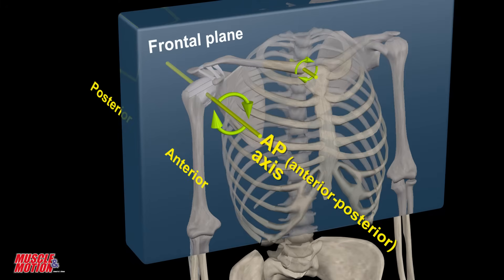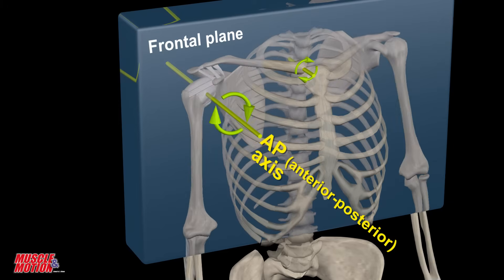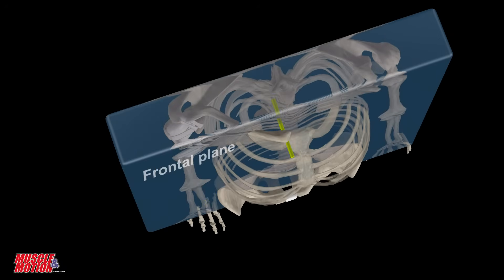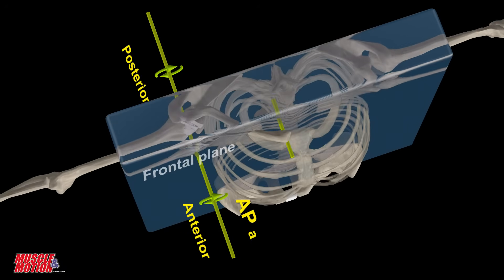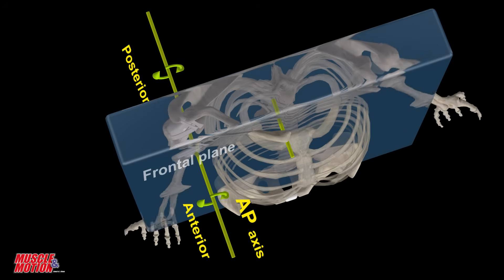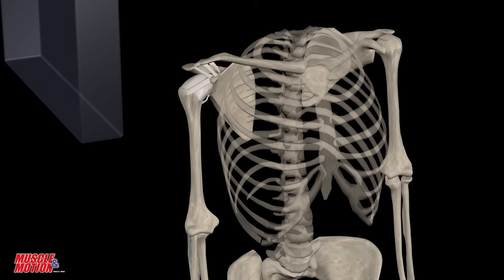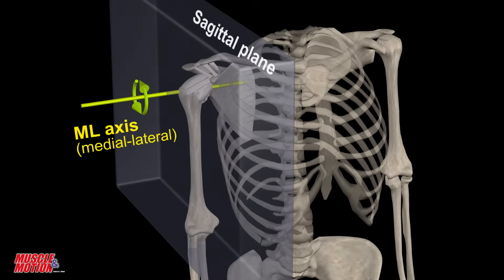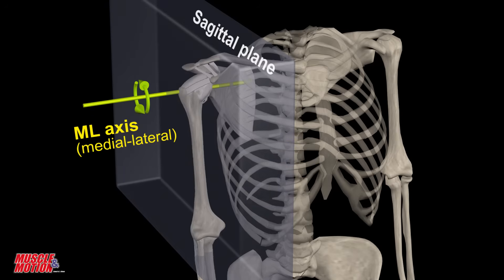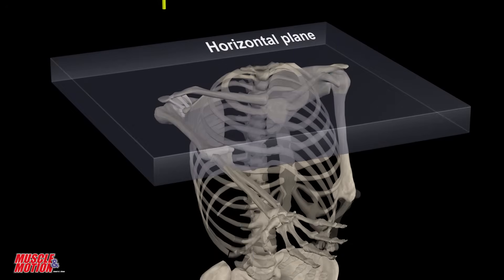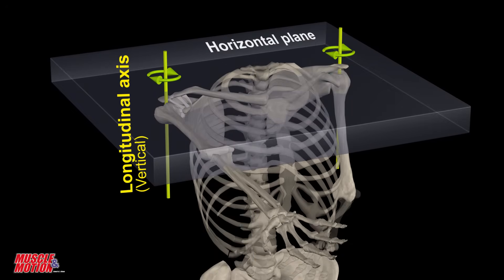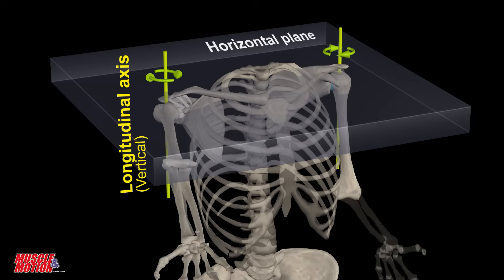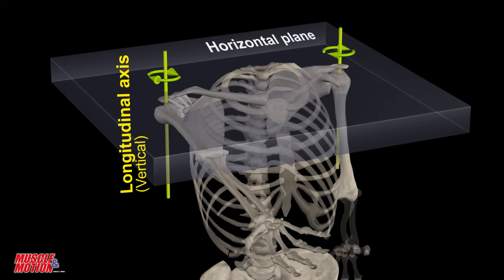There are three axes: an imaginary line running from anterior to posterior and perpendicular to the frontal plane; an imaginary line running from left to right and perpendicular to the sagittal plane; and an imaginary line running from top to bottom and perpendicular to the transverse plane.